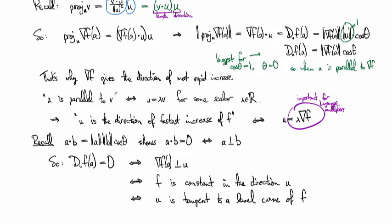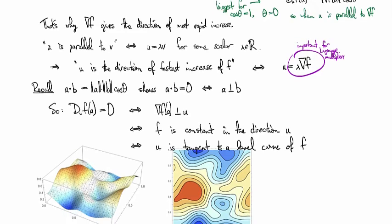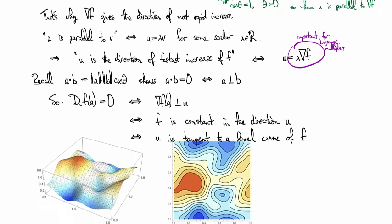Let me show you what I mean with a picture. Okay. So, here we have now a plot of some function as a 3D graph. And then I've also got the contour plot so that you can see the level curves that correspond to this particular function.